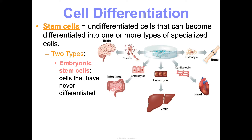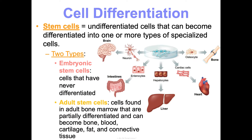Stem cells are found in two places: in embryos, when your very first cells have never differentiated while you're developing, and also in you right now as a biologically considered adult. Your bone marrow has stem cells in it, but the difference is they're partially differentiated. The stem cells in your bone marrow can't become neurons or brain cells, but they can become bone, blood, cartilage, fat, and other connective tissues.